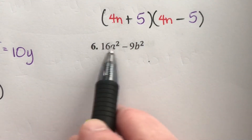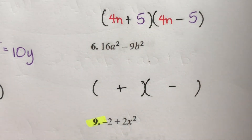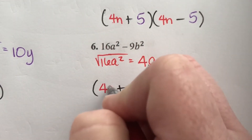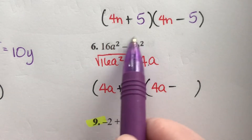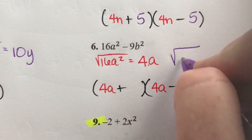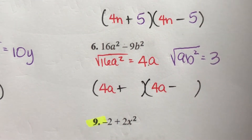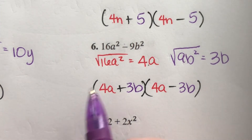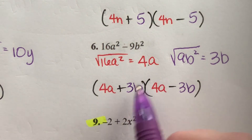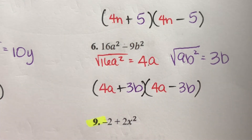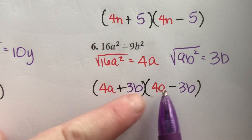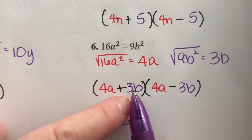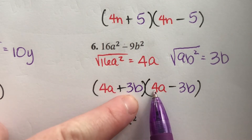One more: 16a² - 9b². Square root of 16a² is 4a. Square root of 9b² is 3b — square root of 9 is 3, square root of b² is b. So our answer is (4a+3b)(4a-3b). If you want to check yourself, use the FOIL method. The outer terms give -12ab; the inner terms give +12ab. They cancel each other out.